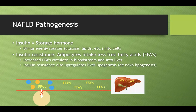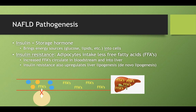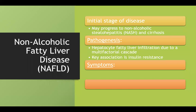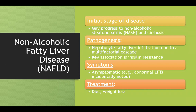Additionally, insulin resistance can upregulate liver lipogenesis directly, so the liver spontaneously produces additional free fatty acids. This is a double-edged sword — free fatty acids have two different mechanisms to deposit in the liver because of insulin resistance. Both processes lead to fat deposition in hepatocytes.